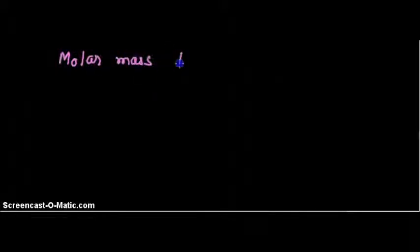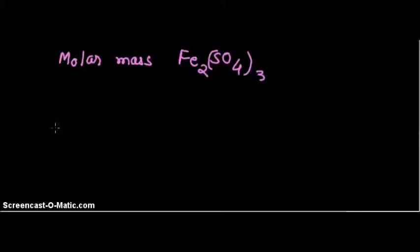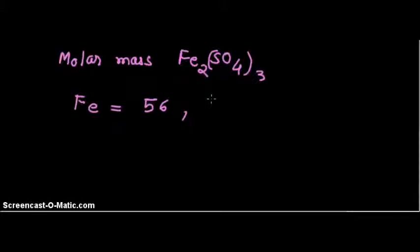The molar mass of Fe₂(SO₄)₃ is the sum of atomic masses of iron, sulfur, and oxygen. The atomic mass of iron is 56, sulfur is 32, and oxygen is 16.